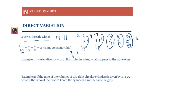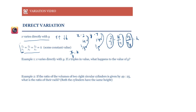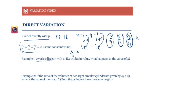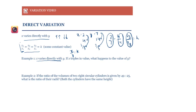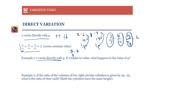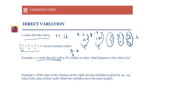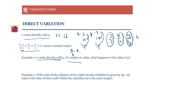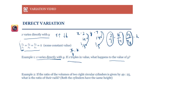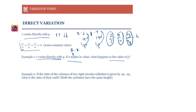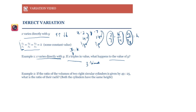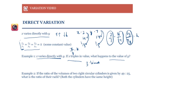Example: X varies directly with Y. If X triples in value, what happens to Y? This is straightforward — if X triples, Y will also triple in value, because X varies directly with Y. So Y becomes three times its original value.